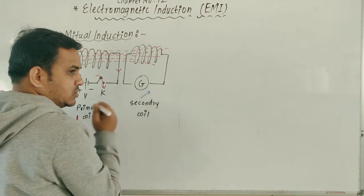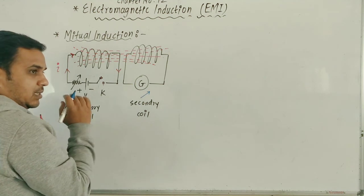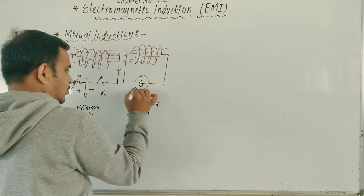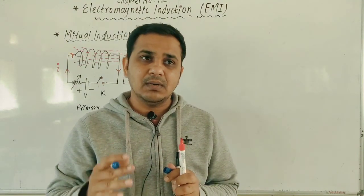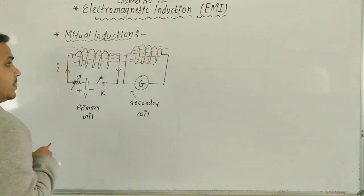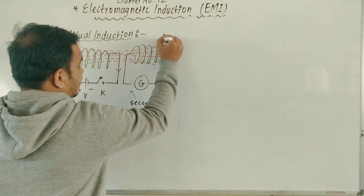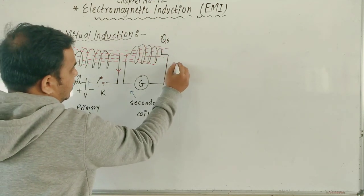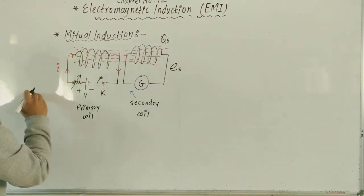Initially it was at zero, but we will see deflection on this side as soon as I close the key. When I open the key, the magnetic lines will decrease because current decreases, and in the galvanometer we see deflection in the opposite direction. This means current is induced here, and current is induced because EMF is induced here. Let us say that the flux linked with the secondary coil is Phi_S, and the EMF induced in the secondary is E_S.